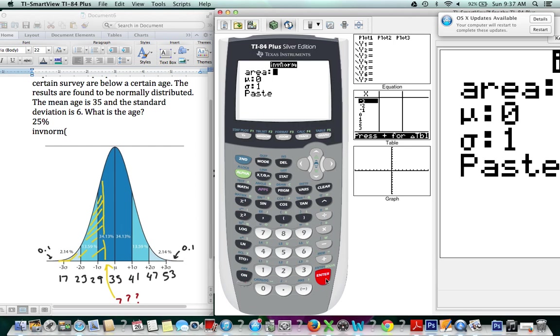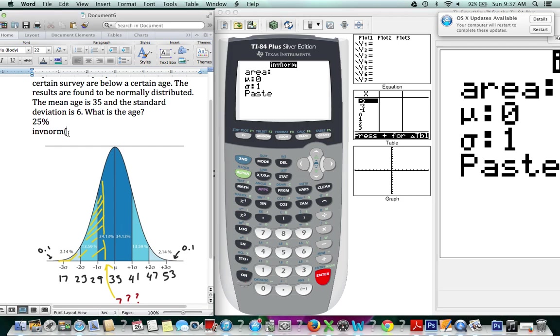So, again, if you have the new calculator, it will look like this, which is a little bit easier. If you don't, you'll have to remember the order in which to enter the values. So the first thing that has to be entered is the area under the curve as a decimal. Area under the curve, meaning the probability.